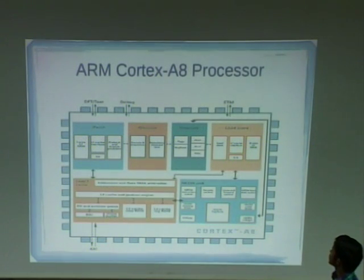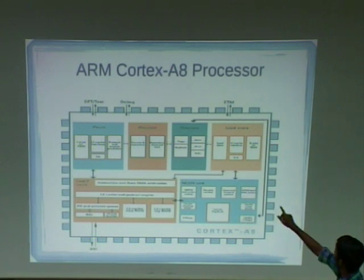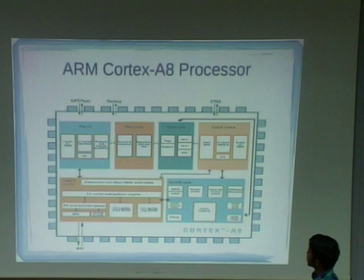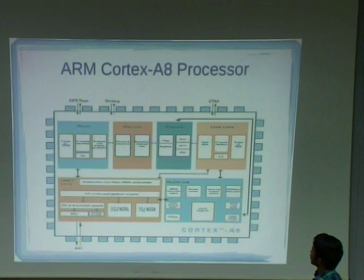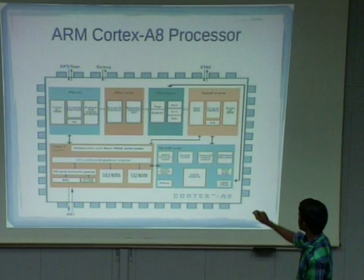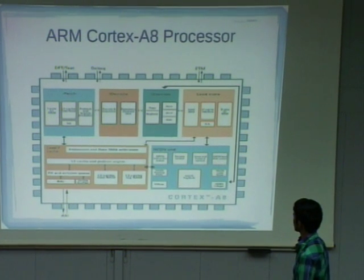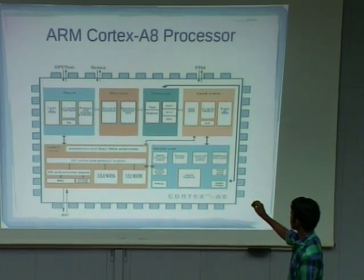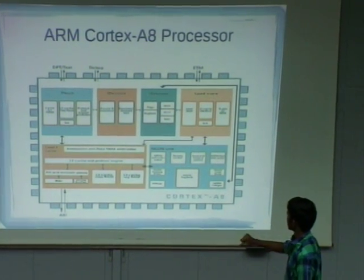This ARM Cortex-A processor is used inside the Akash tablet. It uses load and store architecture — to fetch data from memory, it uses two operations only: load and store. It contains two types of caches: L1 cache, which is integrated in the processor itself, and L2 cache, which is placed outside. Inside the L2 cache, they kept instruction registers and some registers to support DMA.